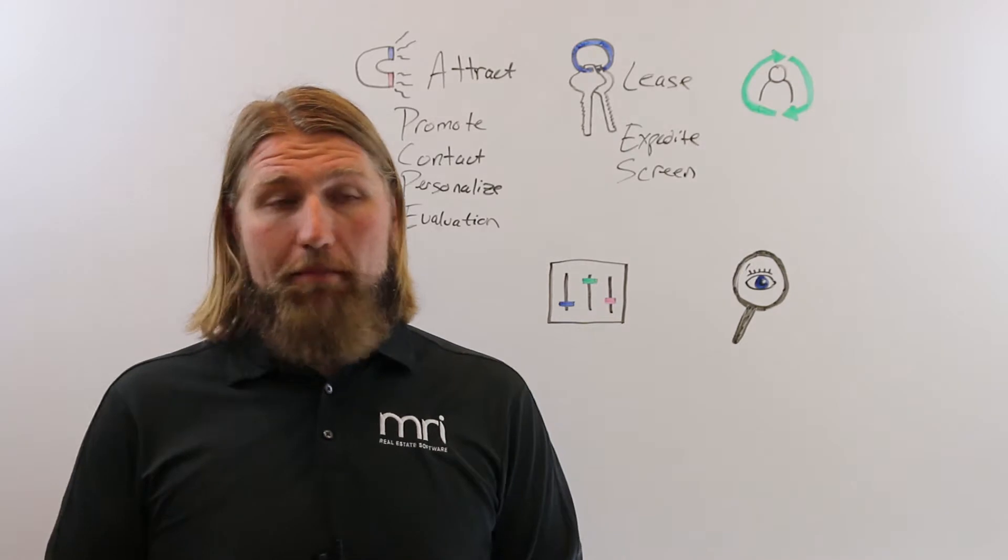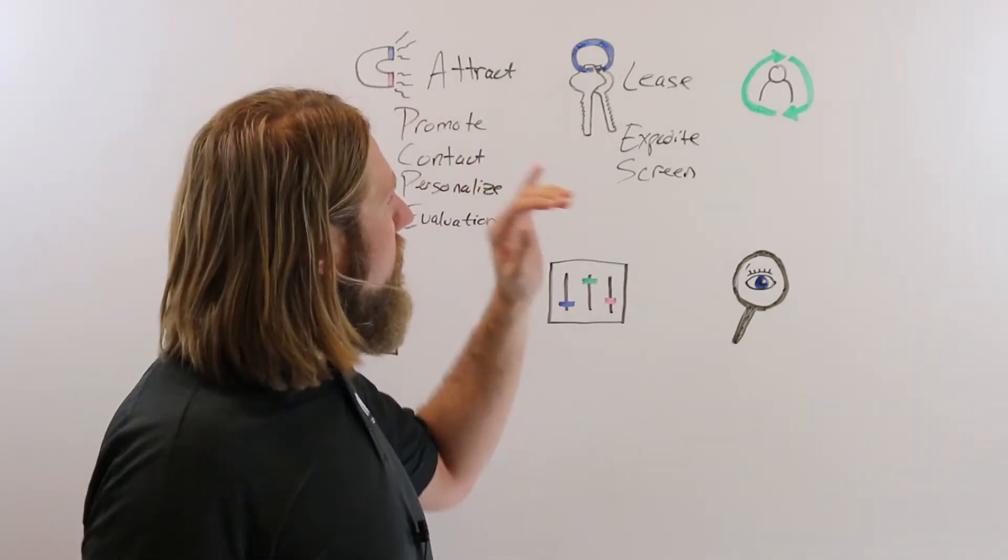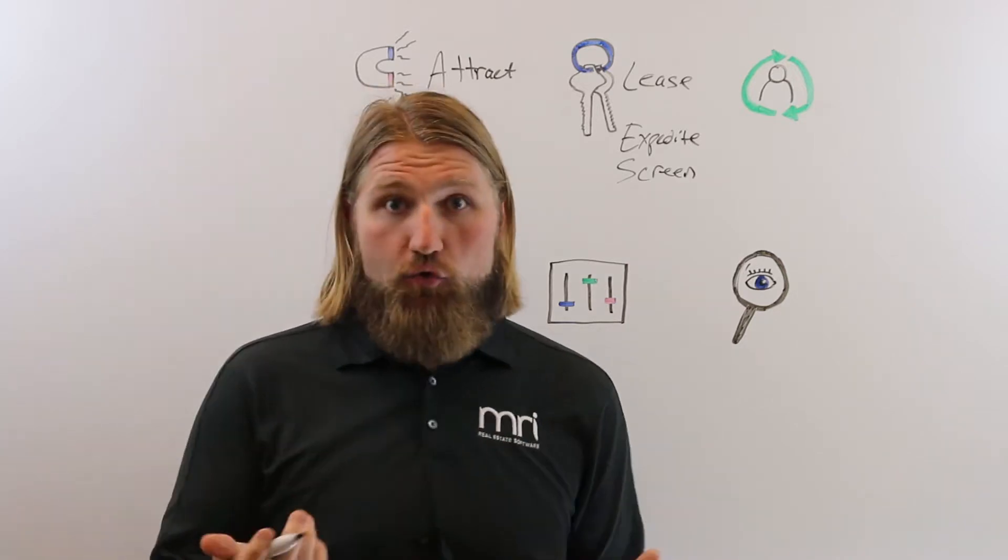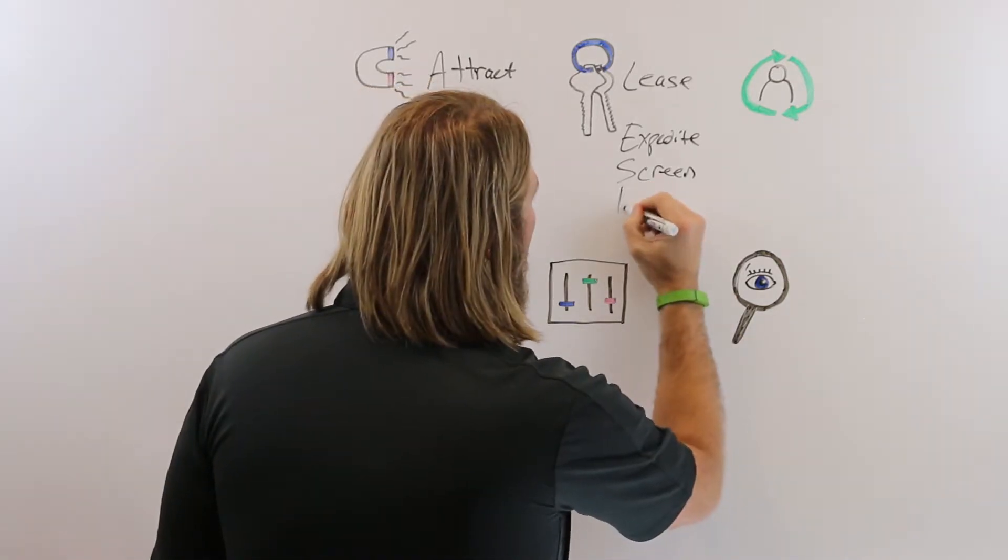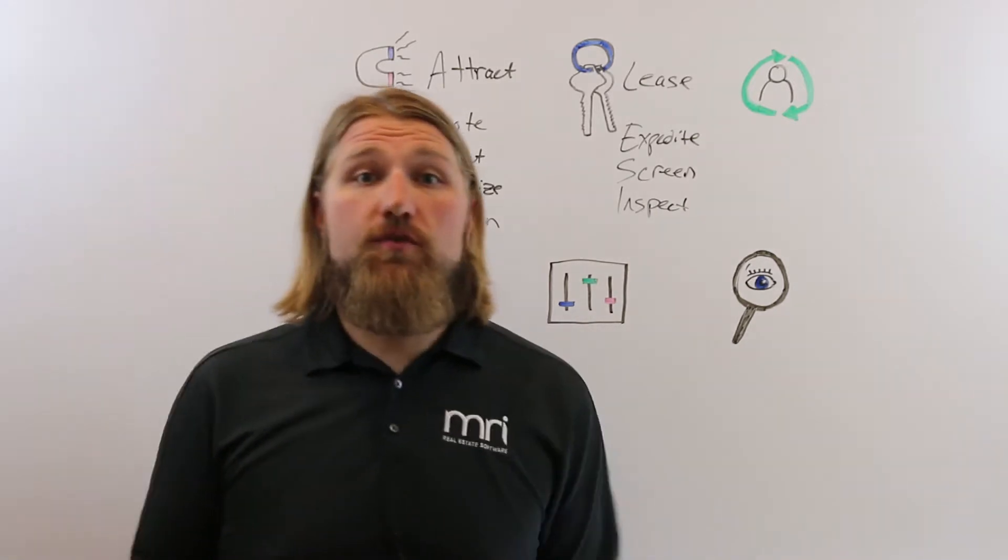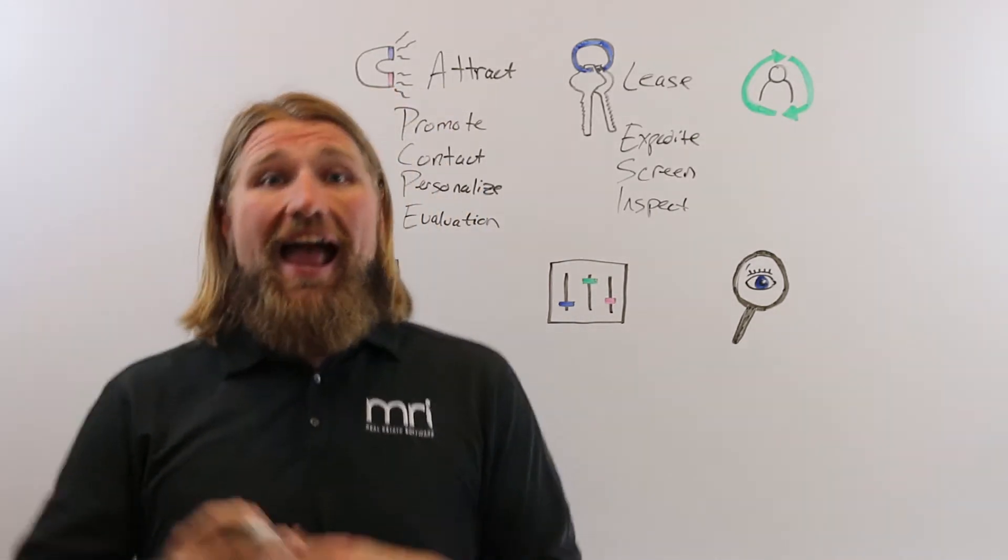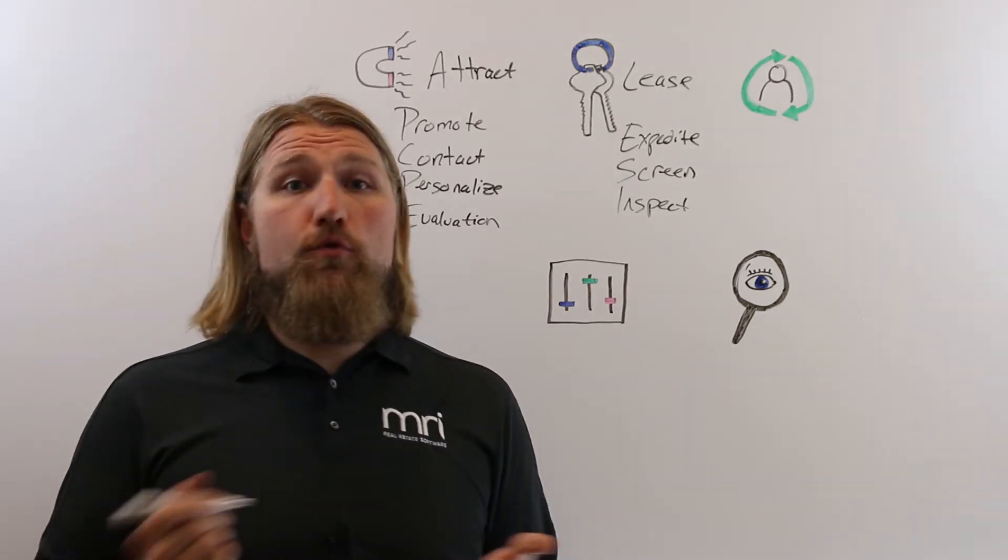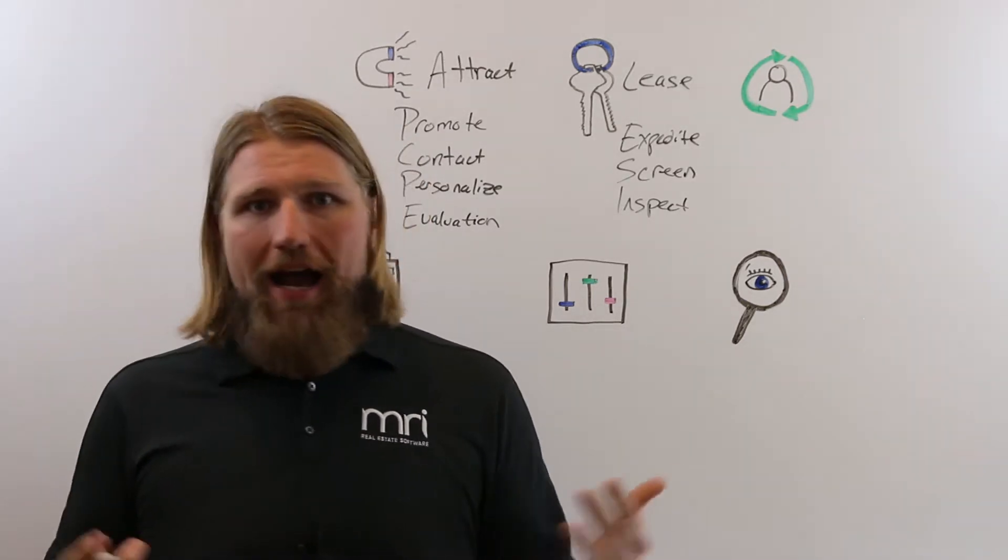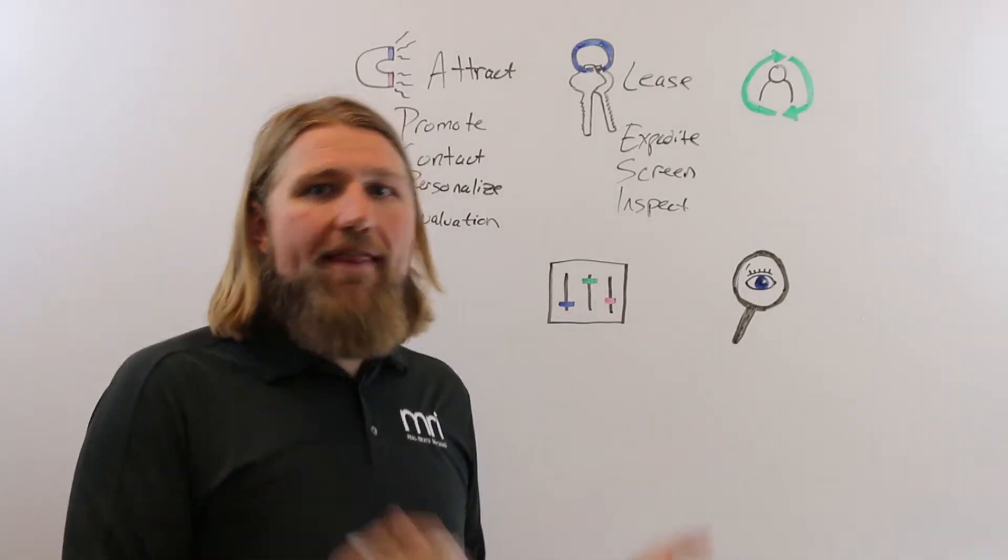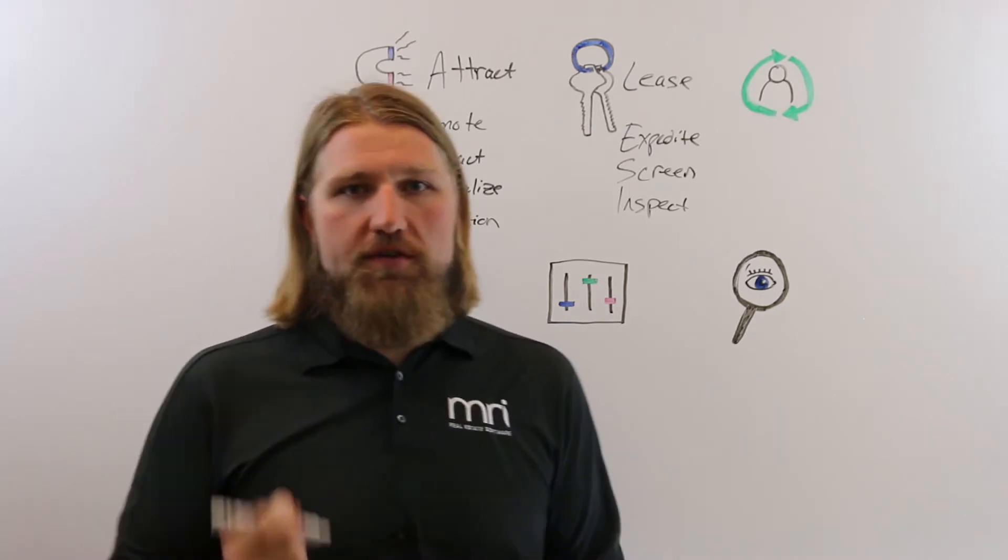The last piece of this: we do the lease process, they get screened, everything looks great. We're now going to help by automating the inspection process as well. Now you can go with the resident out to the property, check it out, and do a move-in inspection digitally from your iPad. All that information pushes into MRI with that new resident, and then when they do decide to leave you can do the same thing to provide a move-out inspection.